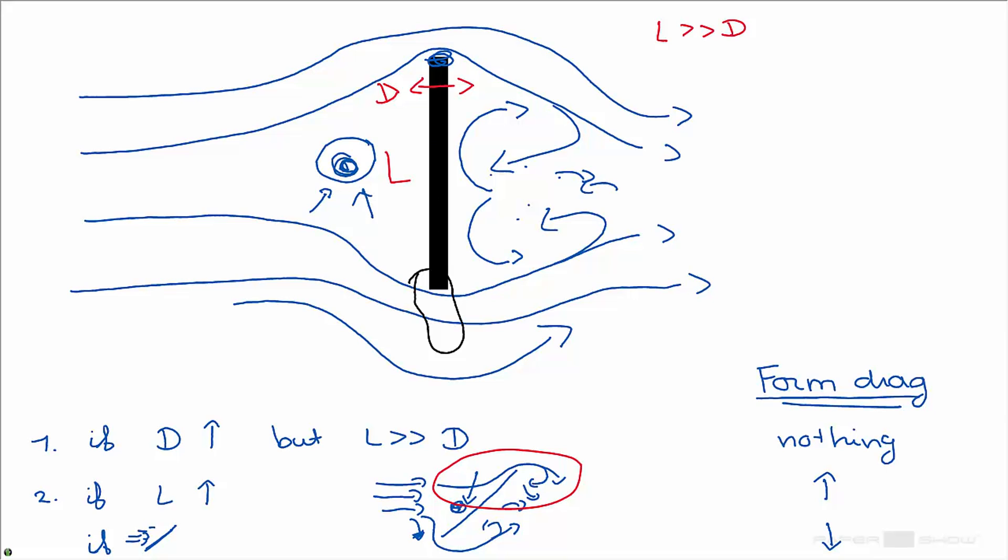This can also be shown by this orientation, in which you would mainly have friction drag and almost no form drag. In this case, friction drag is almost 100%, while form drag would be almost 0%. In this case, it's in between.